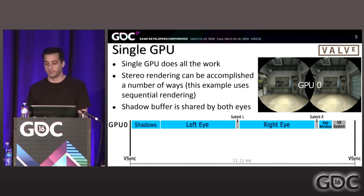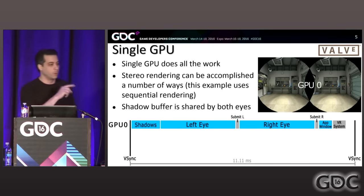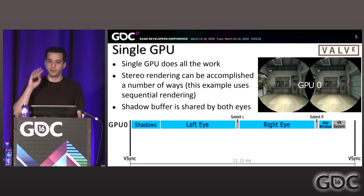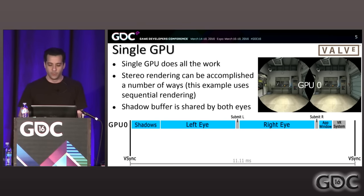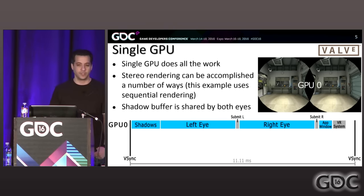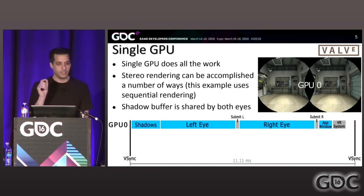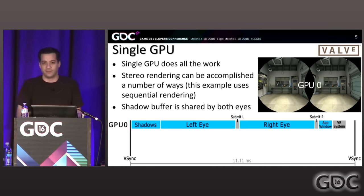The application then renders what we call the app window or companion window — generally something rendered on the main monitor, often a mirror of one eye. For co-op or party game experiences, some developers render something completely different for people not wearing the HMD. That's a variable amount of work. Then the VR system steps in, does lens distortion, chaperone bounds, overlays, and other things. When you submit left and right eye textures, there may or may not be GPU work that happens — plan for a little GPU work just in case.